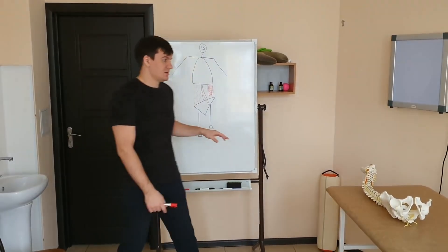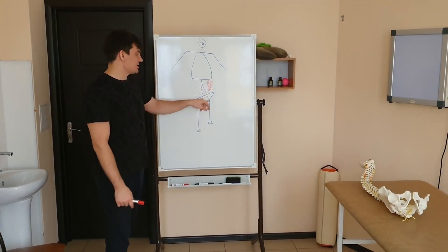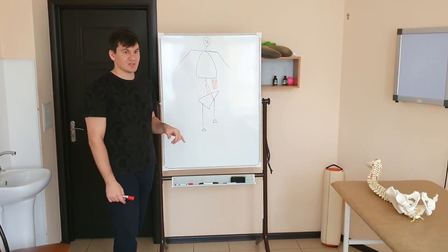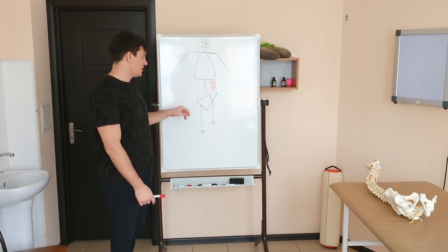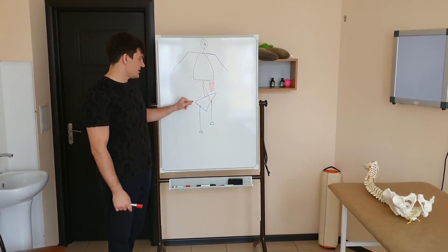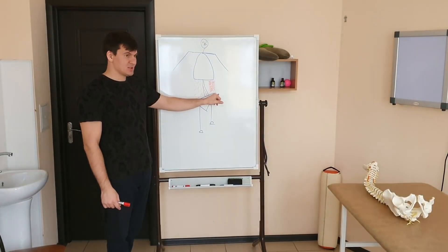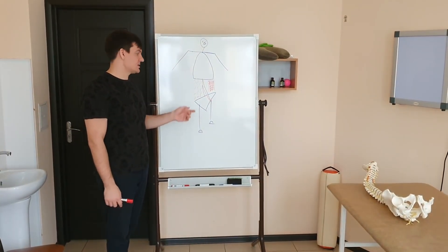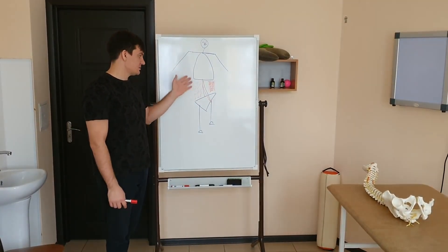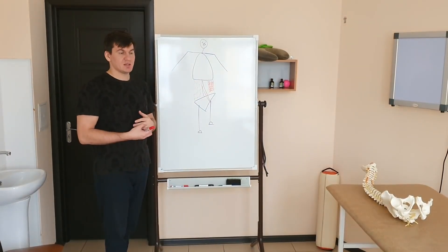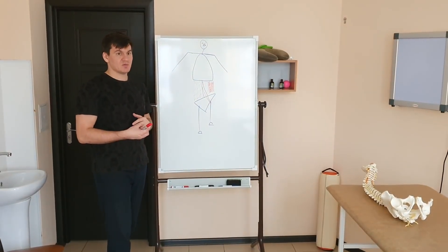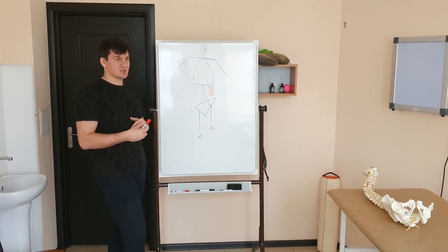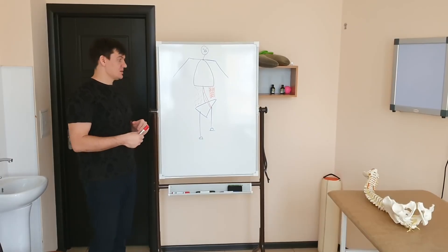The position of the pelvis itself is formed at the moment of a step — when one side of the pelvis is higher and the other is lower. It's useless to train this muscle group separately if you don't correct this movement in your step.